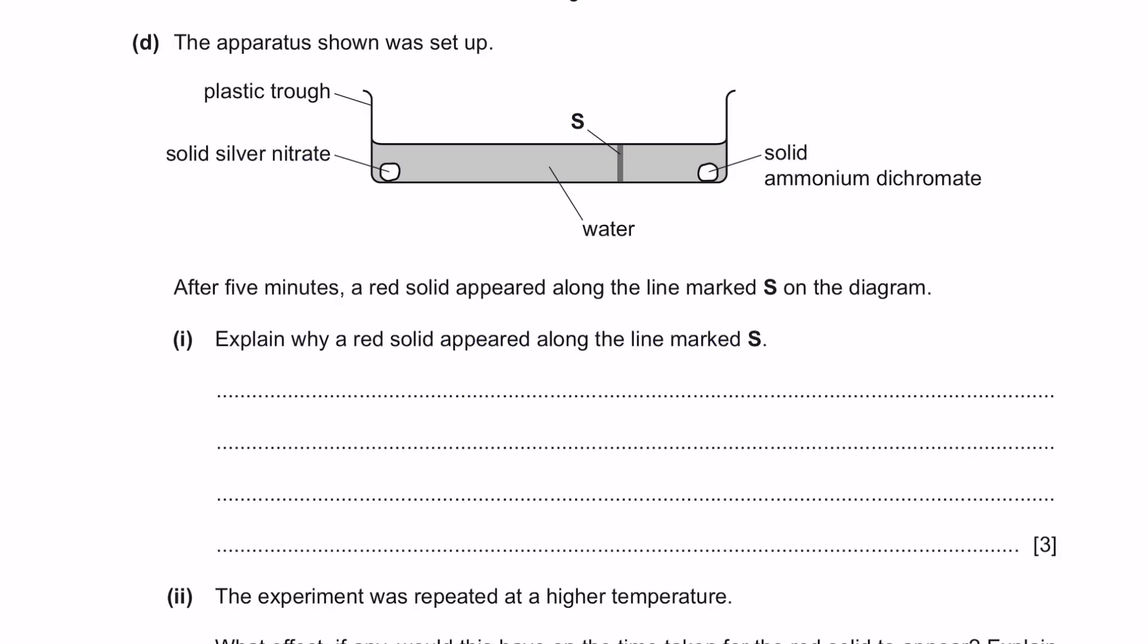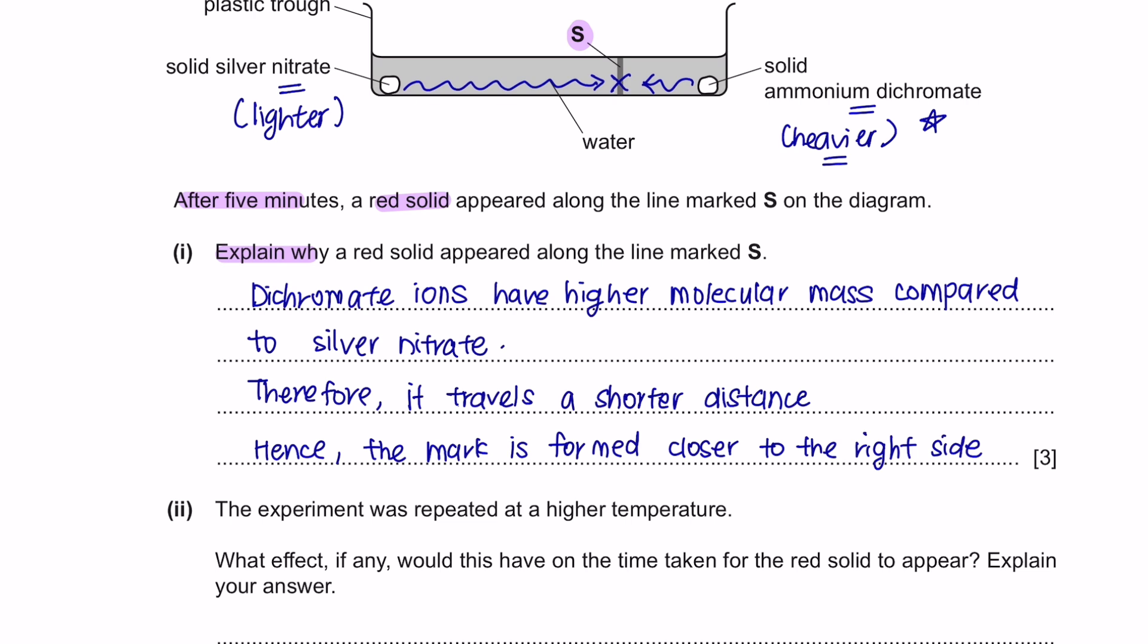Next, question D. The apparatus shown was set up. After 5 minutes, a red solid appeared along the line marked S. Explain why a red solid appeared along the line marked S. So, the concept is going to be the same. The particles of silver nitrate will react with the particles of ammonium dichromate when they meet over here. It shows that the particles of silver nitrate have travelled a further distance, making this a lighter compound compared to ammonium dichromate, which has only travelled a shorter distance due to its heavier mass. So, for three marks, we can say that dichromate ions have a higher molecular mass, compared to silver nitrate, which causes it to travel at a shorter distance, hence the mark is formed closer to the right side.